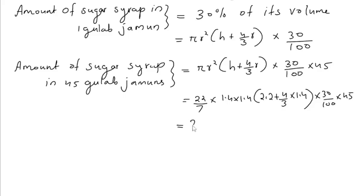Which is equal to 22/7 into 14/10 into 14/10. Inside the bracket, when we multiply 4 into 1.4 we get 5.6 and the LCM is 3. So we get 6.6 plus 5.6 divided by 3 into 30 divided by 100 into 45.